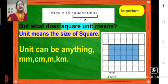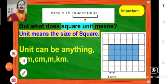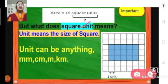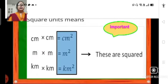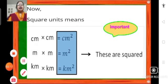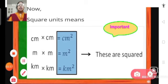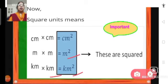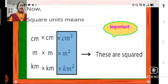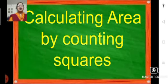When we say 15 square units, what does it mean? Unit means the size of the square — how much the square measures. It can be in millimeters, centimeters, meters, or kilometers. So the square unit can be centimeter × centimeter, or centimeter squared; it can be millimeter, meter × meter or meter squared, or kilometer × kilometer — that means kilometer squared. It is very important to remember this. Now, how do we calculate area by counting squares?